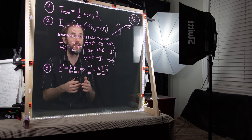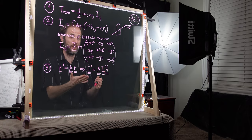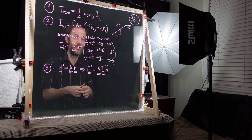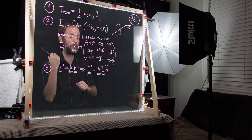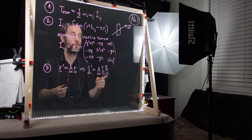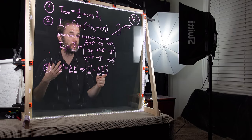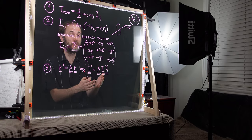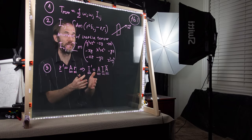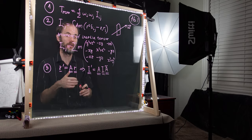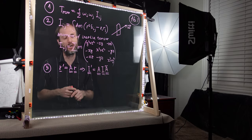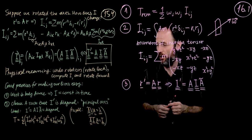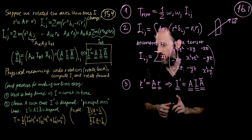The physics behind this is: if we have an expression for I in the old coordinates, we rotate back to the old coordinates — which is precisely what A-transpose does — then here is our tensor, and then we rotate the coordinates forward to get to the primed coordinate system. This makes sense at an intuitive level.